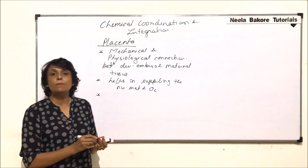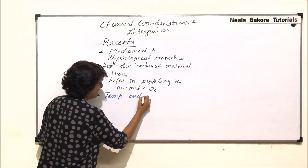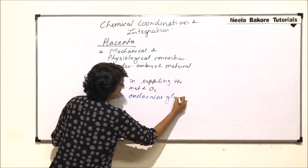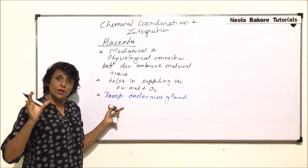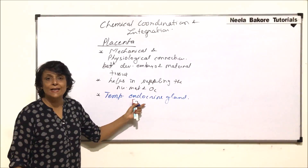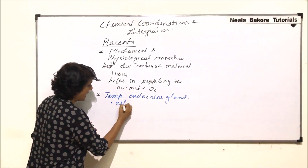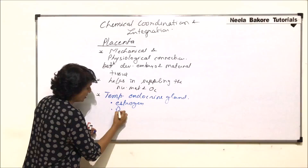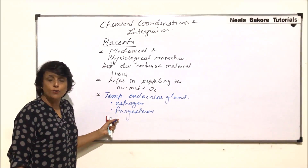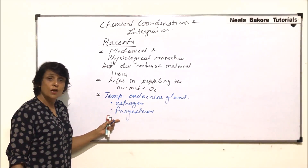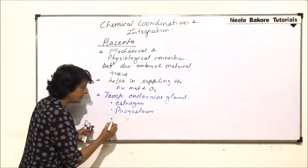Placenta acts as a temporary endocrine gland. From the time of its formation till parturition, it acts as an endocrine gland and secretes certain hormones, out of which estrogen is one and progesterone is the second. Their roles we have already discussed, as these are the same hormones also produced from the various cells of the ovaries.